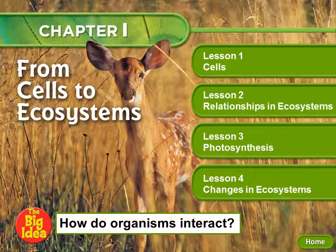Remember, our driving question for this chapter continues to be: how do organisms interact? Our objectives for this particular lesson are to explain ecosystems, communities, and populations, and to describe how food chains, food webs, and symbiotic relationships work.